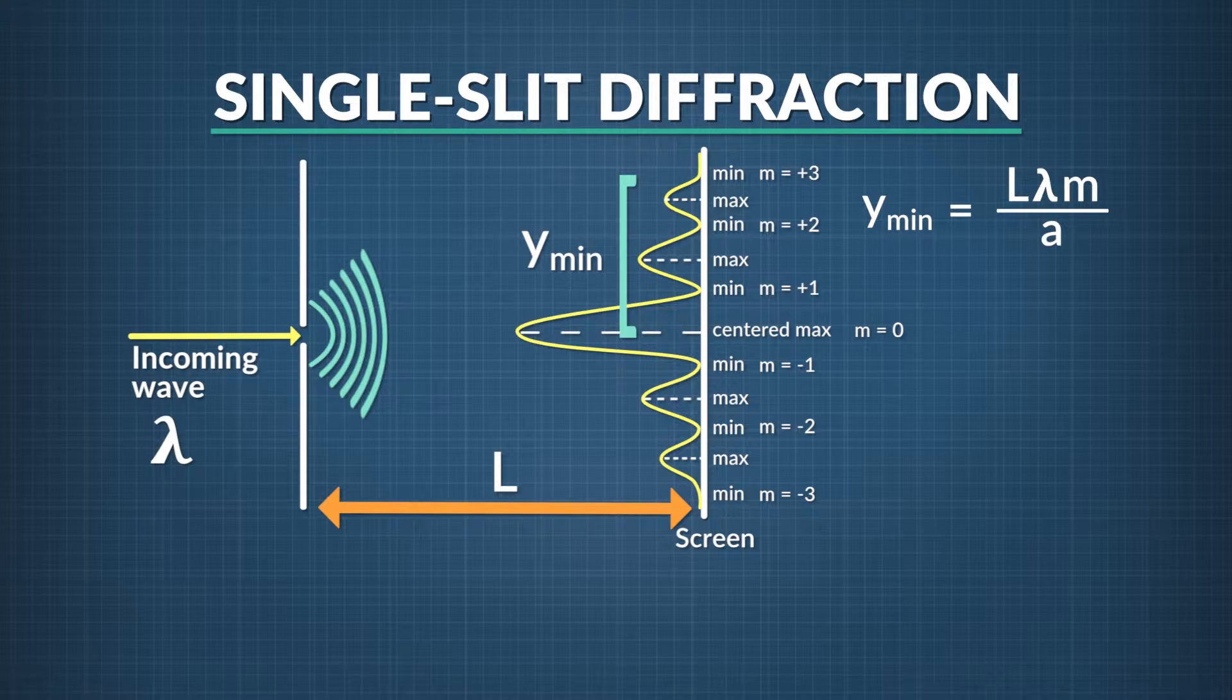M can be positive or negative, depending on whether you are looking at minima to the left or right of the central maximum. Finally, a is the width of the slit the wave passes through.